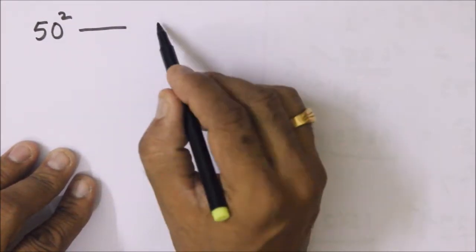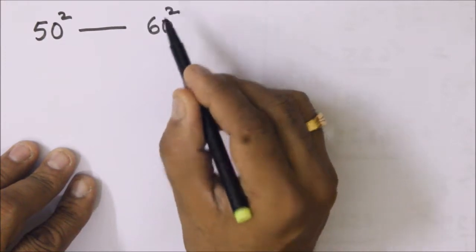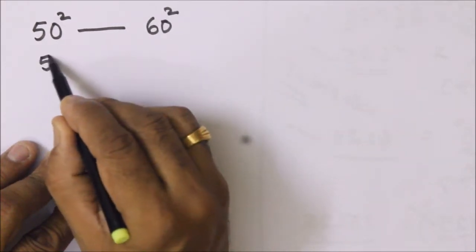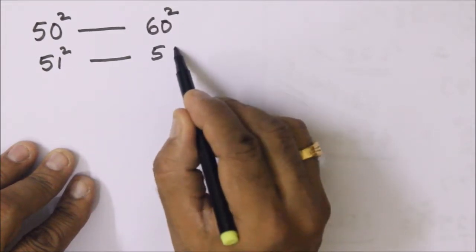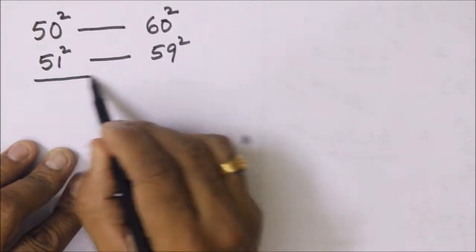That means we can find the squares of 51 to 59. Let's see the rule.